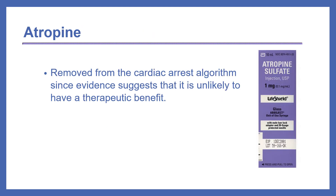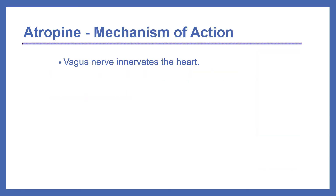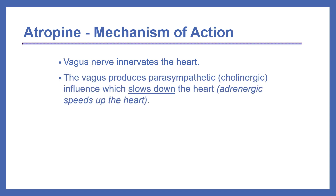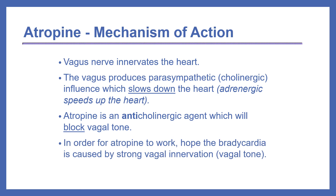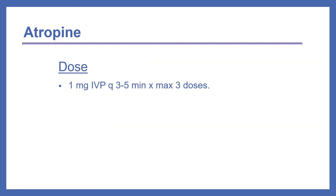Atropine has been removed from the cardiac arrest algorithm, as evidence suggests it is unlikely to have a therapeutic benefit. The mechanism of action involves the vagus nerve, which produces parasympathetic or cholinergic influences that slow the heart. Atropine is an anticholinergic that blocks vagal tone. However, for atropine to work, the bradycardia must be caused by a strong vagal innervation. The dose of atropine is 1 mg IV push every 3 to 5 minutes for a maximum of three doses.